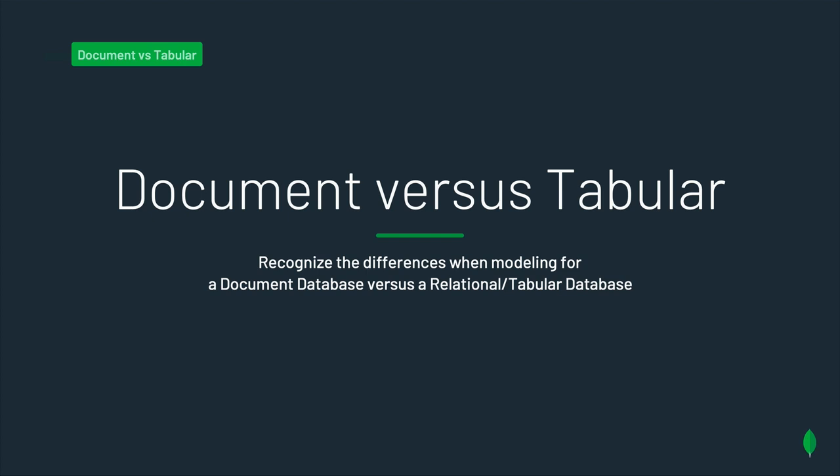Let's talk about the differences between a document database and a tabular database. These are very important to understand, so you build a good mental model when modeling for MongoDB. Note that I use 'tabular' to refer to what many call the relational database. I prefer using tabular because it's a better description of traditional relational databases, where the data is stored in tables. As for relationships, they're not exclusive to tabular databases. MongoDB is very good at expressing relationships — it may even be better than traditional relational databases, as it offers more different ways to express relationships.